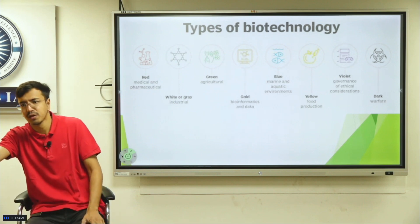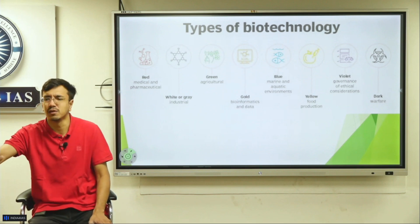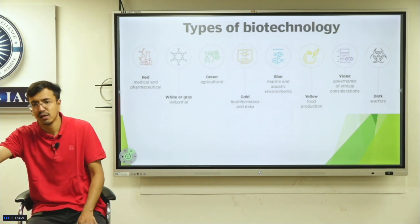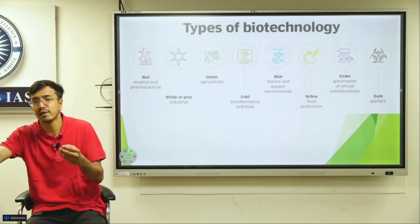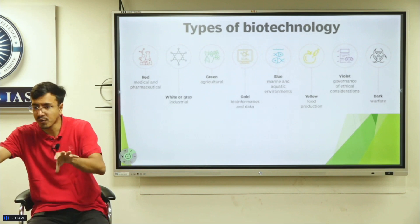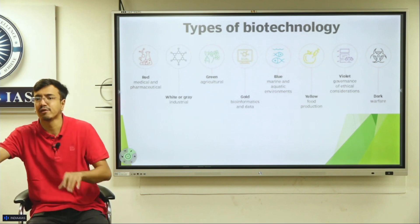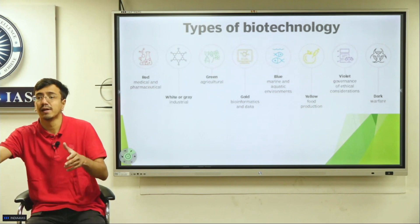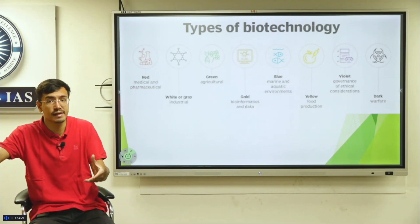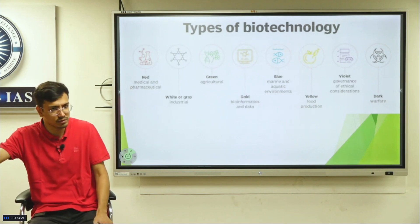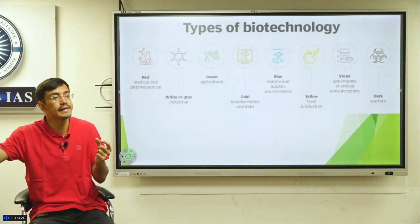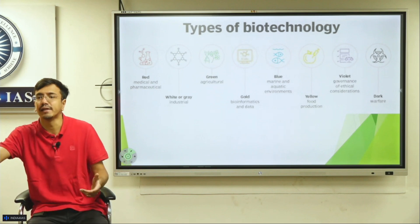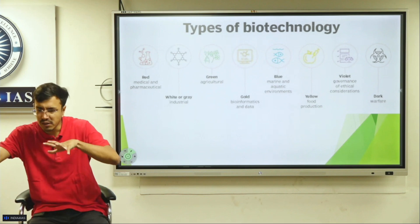In modern biotechnology we have genetically modified crops, recombinant DNA technology, gene editing techniques, gene therapy, stem cell therapy, CAR-T cell therapy — a number of therapies have come up where we directly use biological organisms, their products, or biological processes. For example, biological products include enzymes derived from bacteria, and gene editing is actually a natural biological process we use artificially to edit genes.